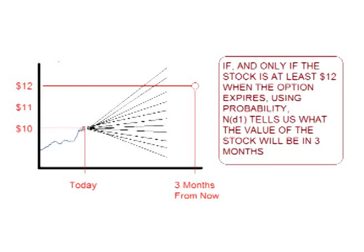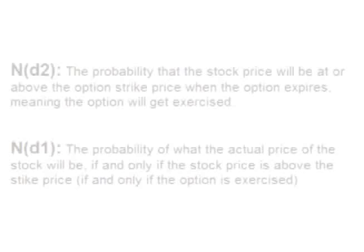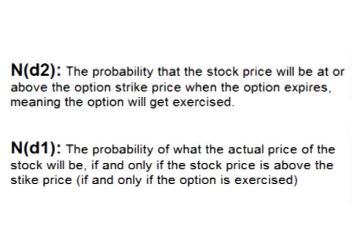ND1 is an expected value formula based on probability that is contingent on the option being exercised. Like ND2, ND1 also takes the historical rate of change of price and looks at the odds of where the price of the stock will be when the option expires, if and only if the price is above the strike price. So using probability: ND2 answers whether the stock price will be at $12 when the option expires, yes or no; and ND1 answers, if and only if the stock price is at or above $12, what will the price of the stock be?